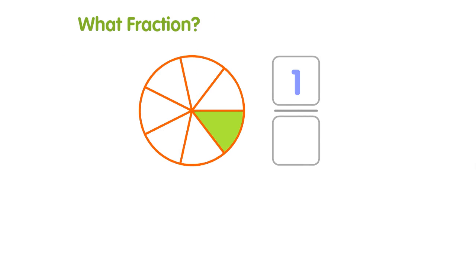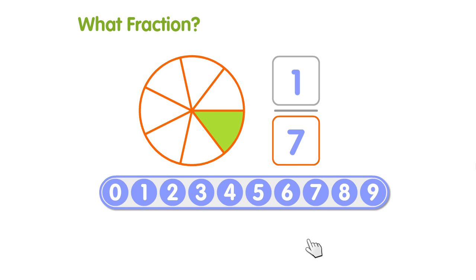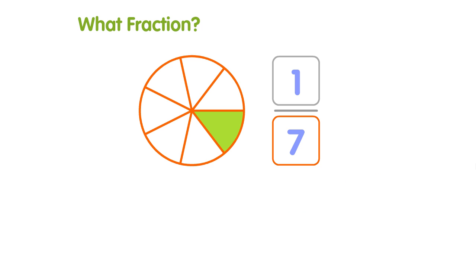In this question you have to write the fraction. The bottom number or denominator is how many parts we have to split the circle into. Let's count. It's seven. The fraction is one out of seven. That's one seventh.